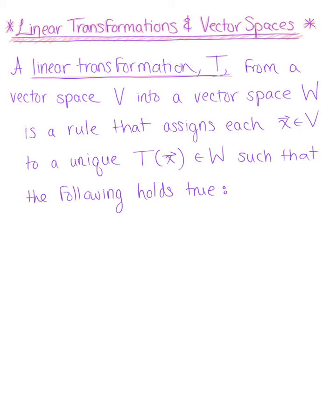A linear transformation T from a vector space V to a vector space W is a rule that assigns each vector X in V to a unique vector T(X) in W.